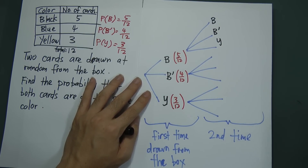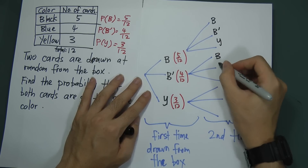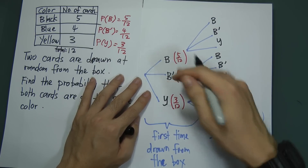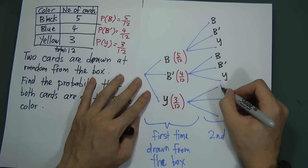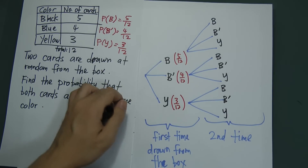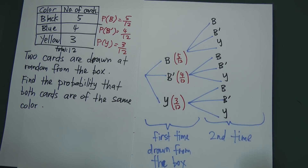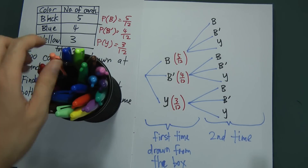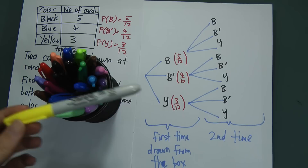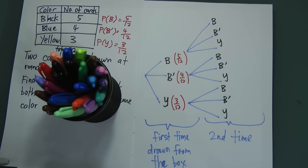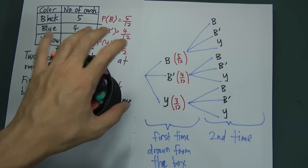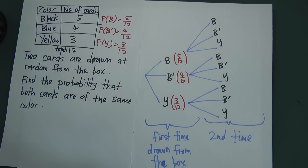When I draw the second card, it's possible to get black, blue, or yellow — because the box only has these three colors. So if I got yellow the first time, the second time it's still possible to get black, blue, or yellow. The first draw means I randomly grab one card — possibly black, possibly blue, possibly yellow — then take it out and draw a second time.